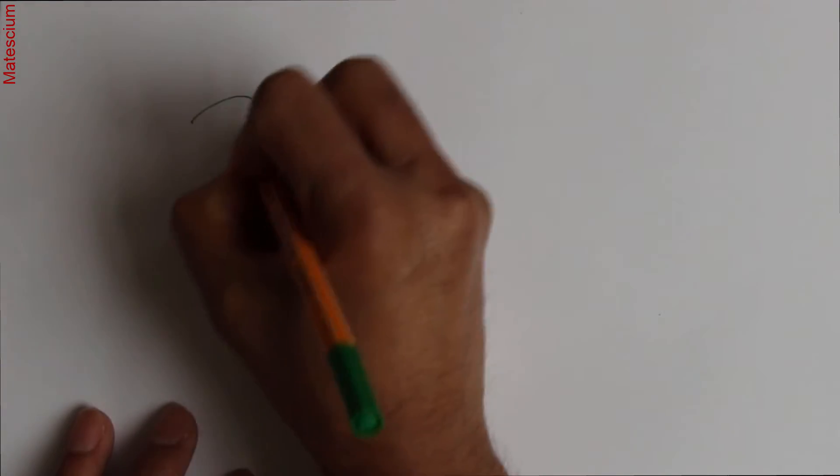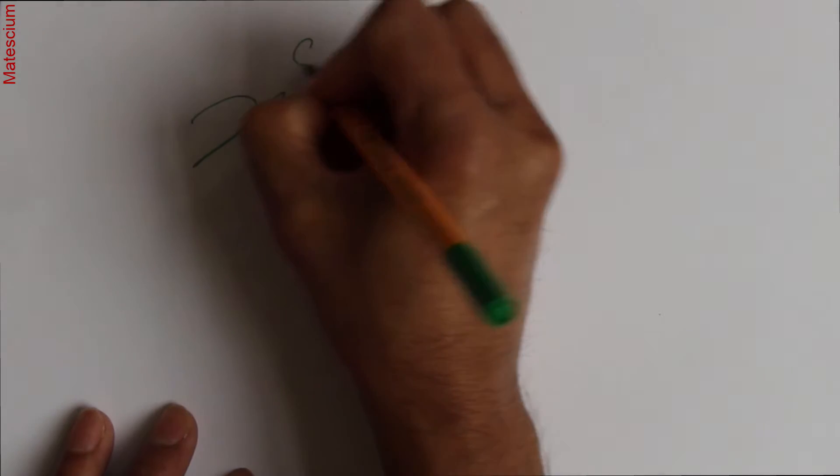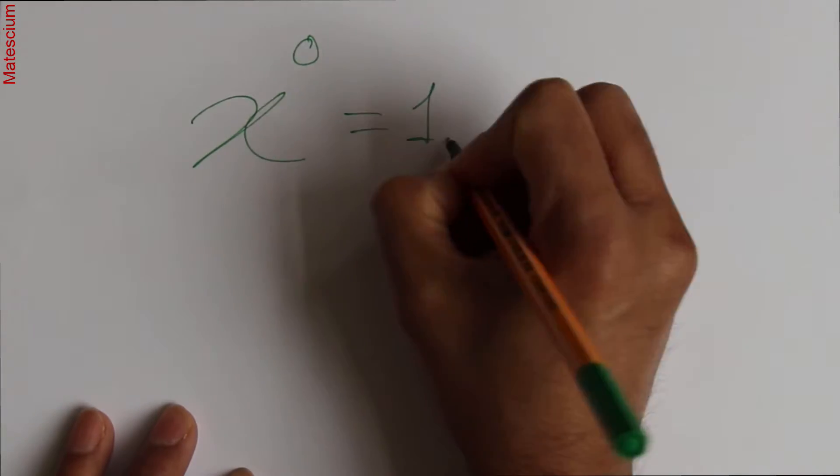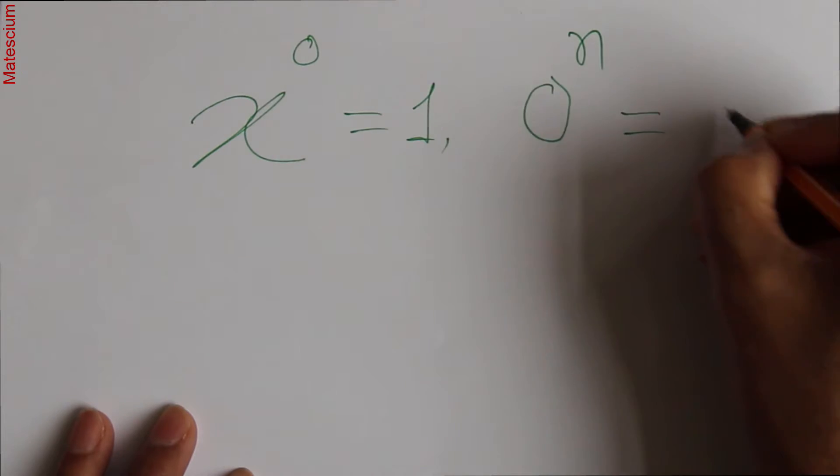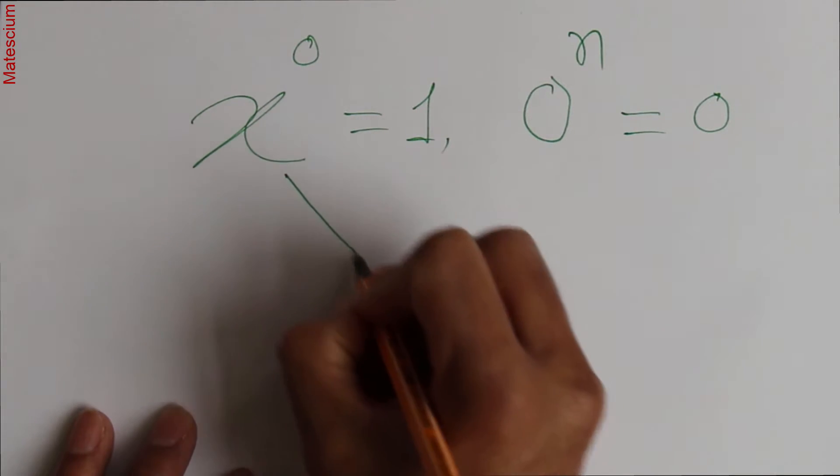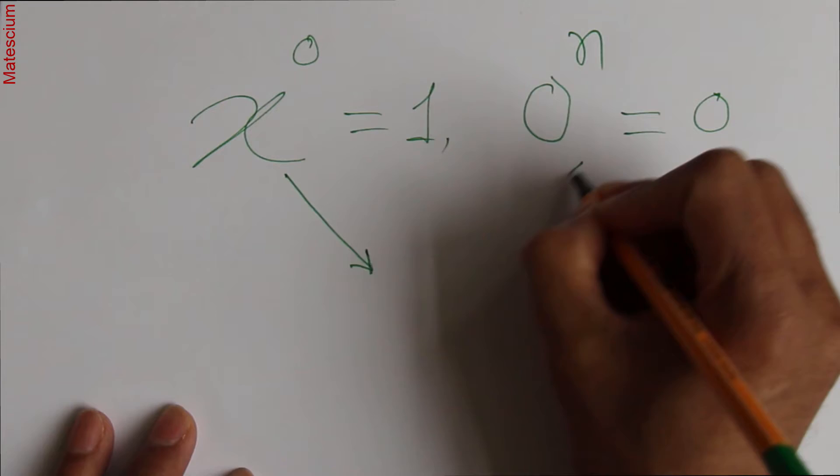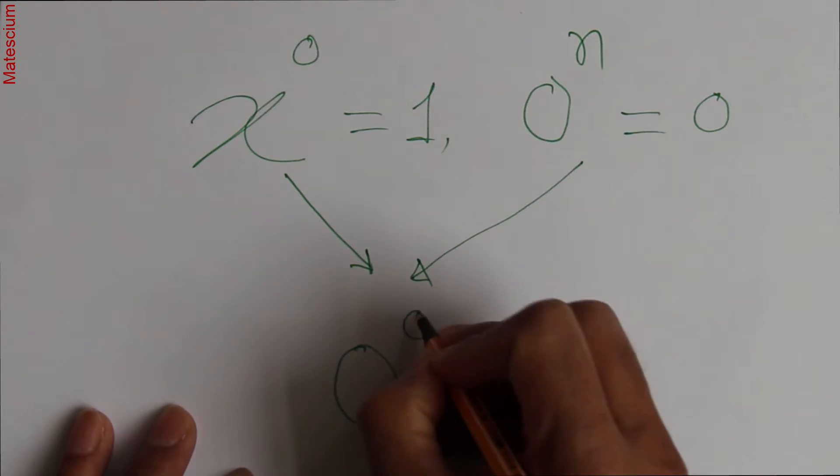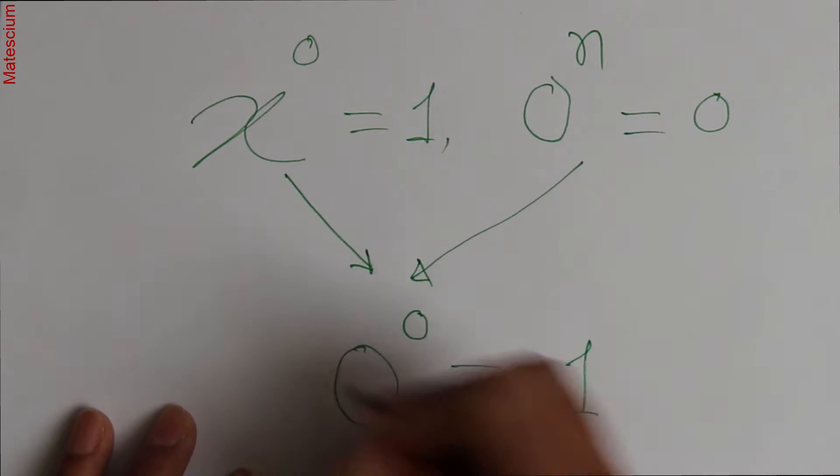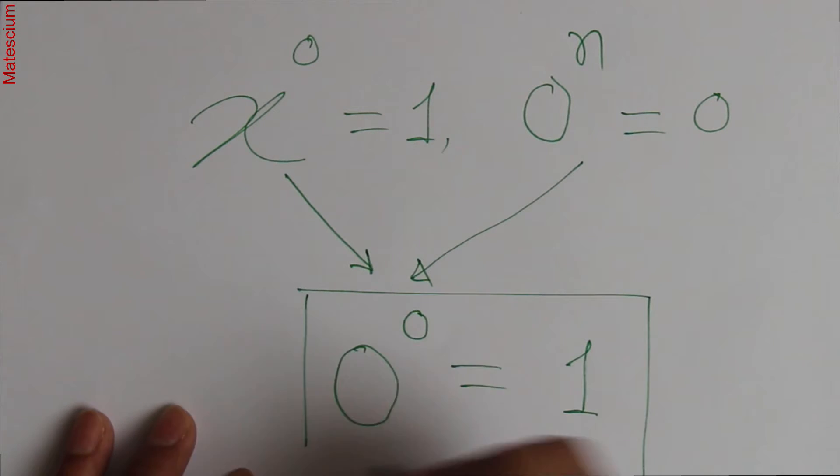As I told you before, any number to the power 0 is equal to 1, and 0 to the power any number is equal to 0. If we combine these two mathematical statements together, we will get 0 to the power 0 is equal to 1. This is the simplest explanation that I can give you.